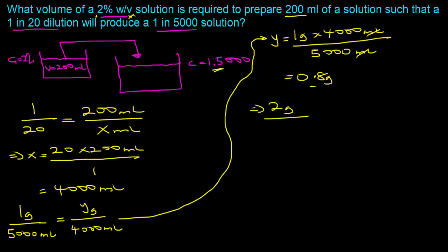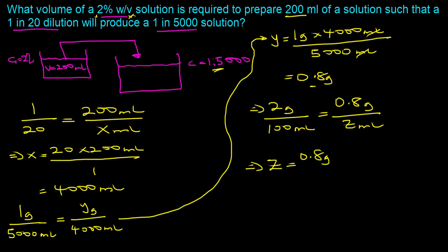Since all 0.8 grams comes from the two percent solution, we can use the two percent concentration — which implies two grams of solute in 100 milliliters of preparation — to figure out what volume we need. Setting up the proportion: z equals 0.8 grams times 100 milliliters divided by 2 grams. The grams cancel out and we get 40 milliliters.